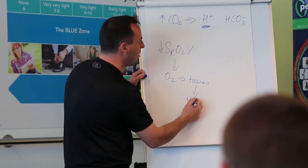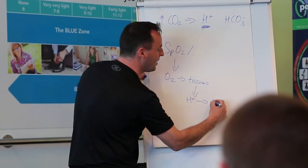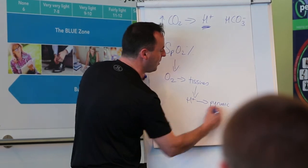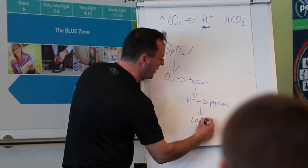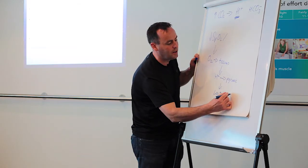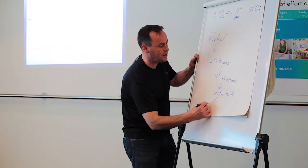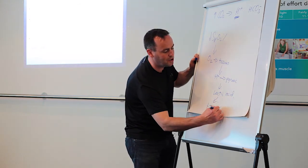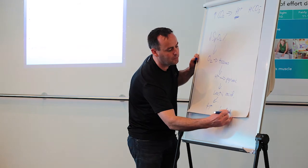When there's a deficiency of oxygen, the hydrogen ion then is associating with pyruvic acid to form lactic acid. Lactic acid then is dissociating pretty rapidly into hydrogen ion and lactate.